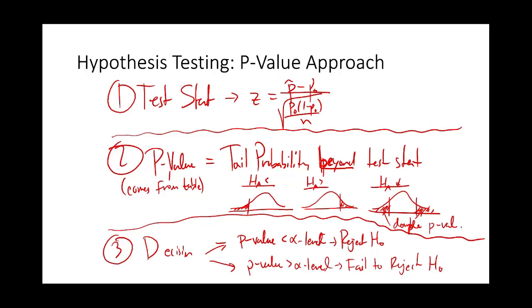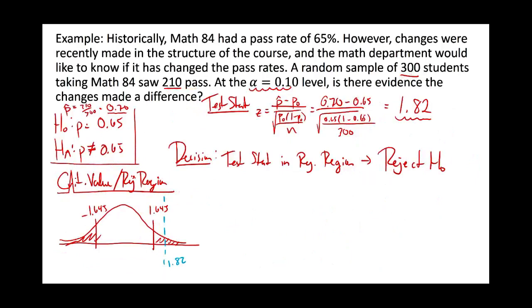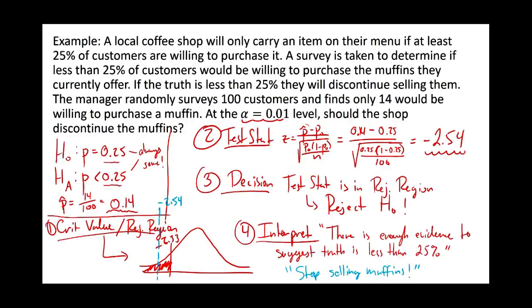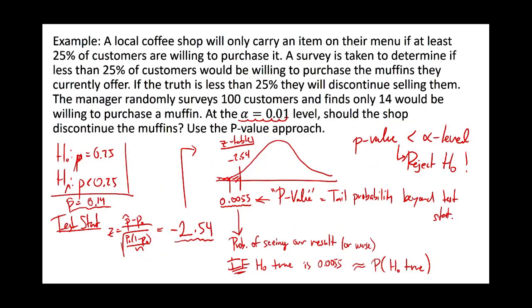So when testing, you have two choices. You can get your critical value and rejection region off the table, calculate your test statistic, see if it falls in the rejection region, and make your decision that way. Or you can skip the critical value step entirely, go straight to your test statistic, take it to the z-table to get the p-value, then compare the p-value to your alpha level.